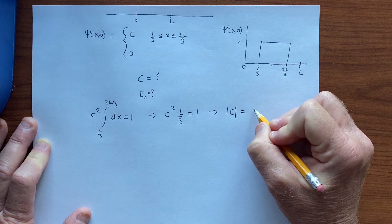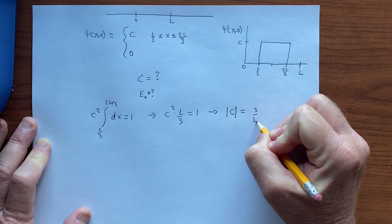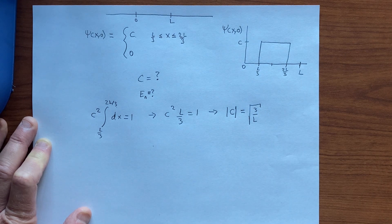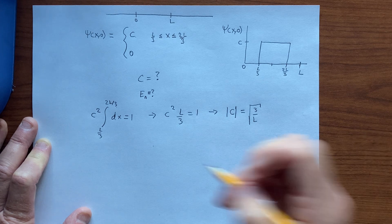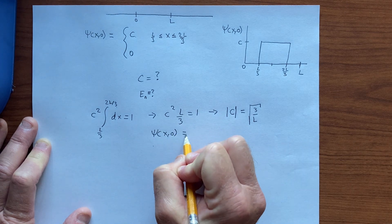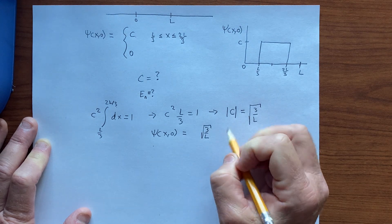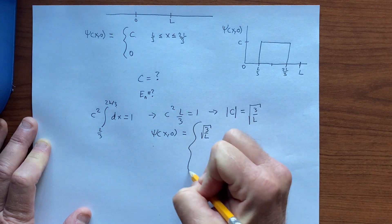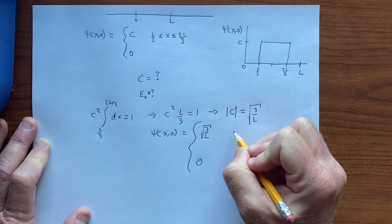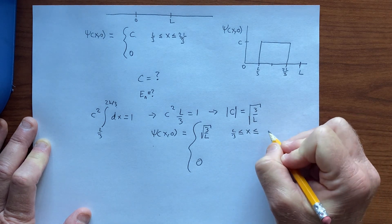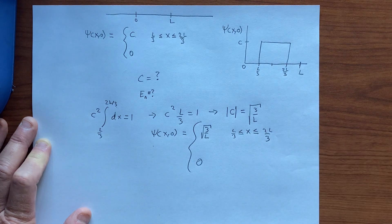Is equal to square root, the positive square root of 3 over L. And so we have psi of x and 0 is equal to root 3 over L for this range. It's just a constant.